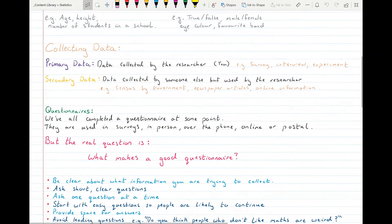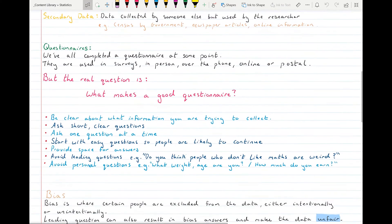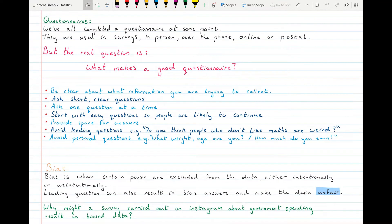If you're looking at questionnaires, we've probably all filled out a questionnaire at some point. But what makes a good survey or a good questionnaire? It should be clear what information you're trying to collect. If I'm doing a survey about people's diets, there's no good putting in a question about what's your favorite band, because it has nothing to do with the type of diet that you take.